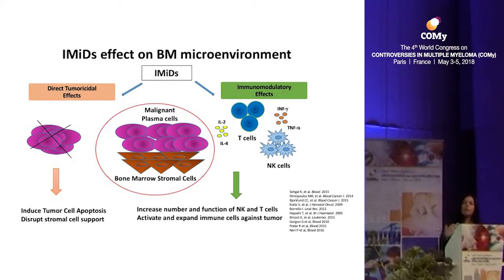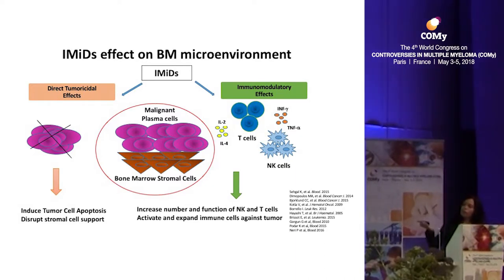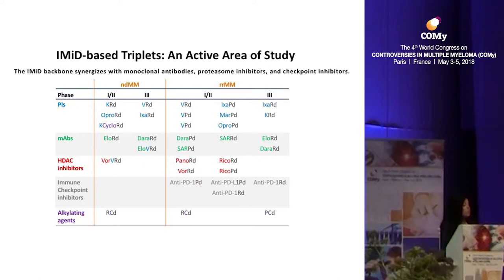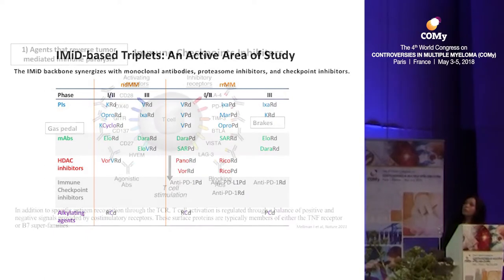IMiDs have two important functions, which is why they are so important in combination therapy. First, they have an anti-tumor effect. Second, they have an immunomodulatory effect — inducing production of interleukin-2, interleukin-4, interferon-gamma, and TNF-alpha, activating T cells and NK cells. They are truly important because they can reactivate and expand immune cells against the tumor, which is why they are now a backbone for several other immunotherapeutic strategies.